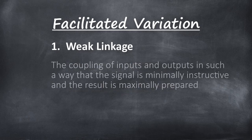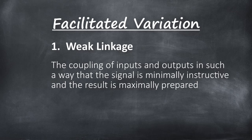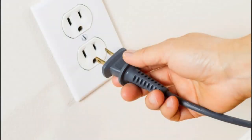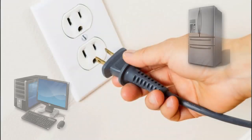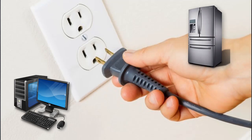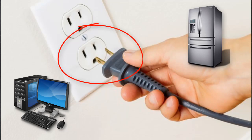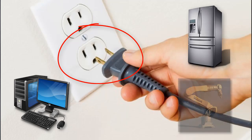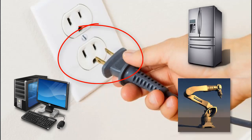Weak linkage refers to the coupling of inputs and outputs in such a way that the signal is minimally instructive and the result is maximally prepared. Consider the electrical outlets coupling the power grid to your computer or refrigerator. The constrained structure of the outlet and plug make the system highly adaptable. After all, the outlet doesn't need to know how a computer or refrigerator operates. The linkage will even work for appliances yet to be invented.